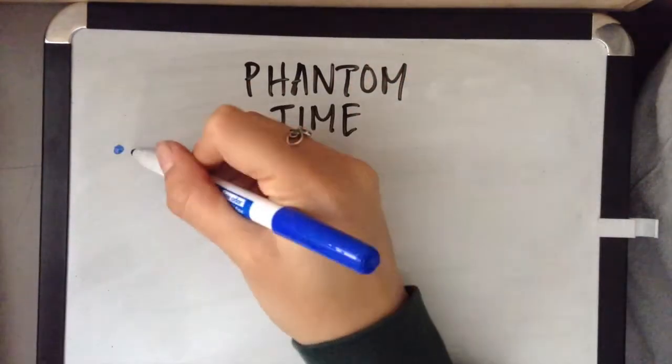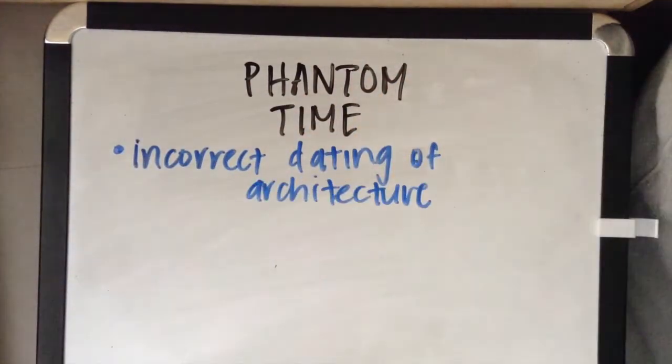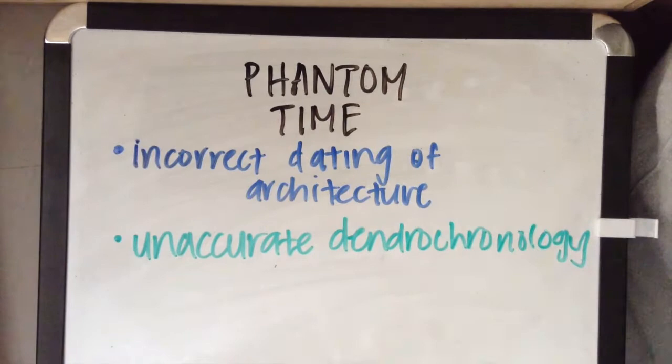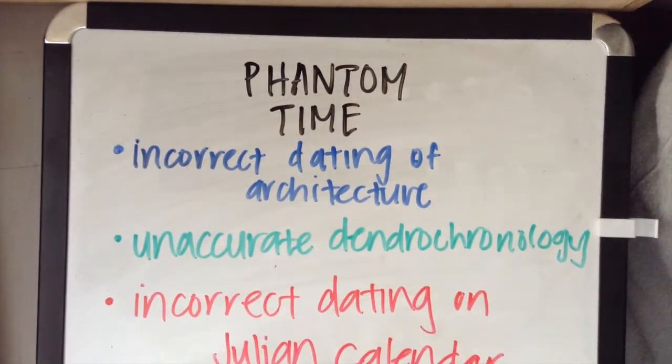He concluded that there were three different explanations for his theory. This included anachronistic architecture, inaccurate dendrochronology, and inaccurate dating on the Julian calendar.